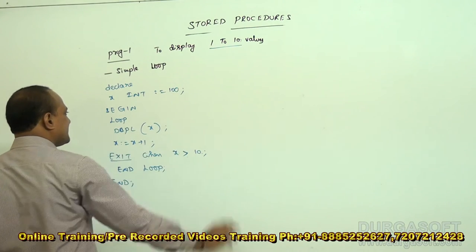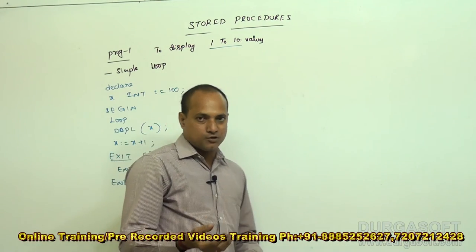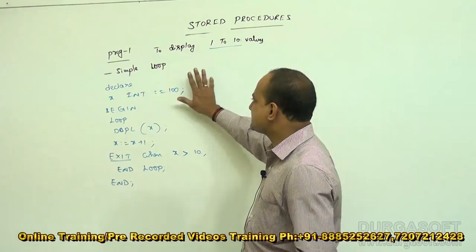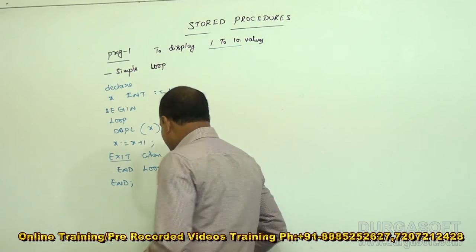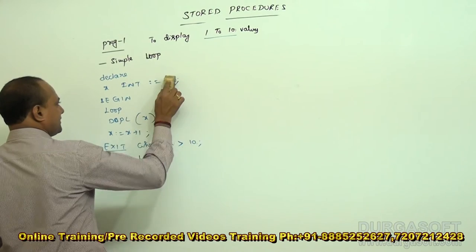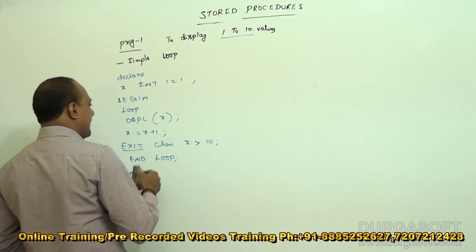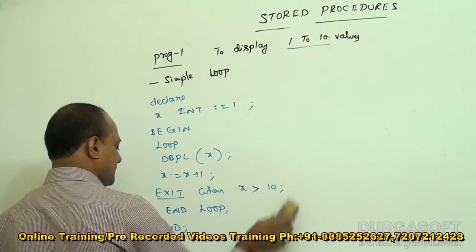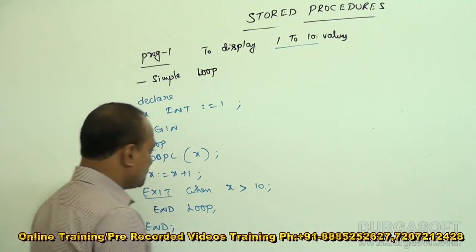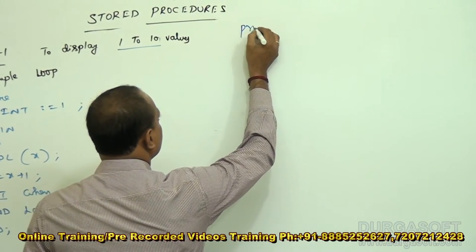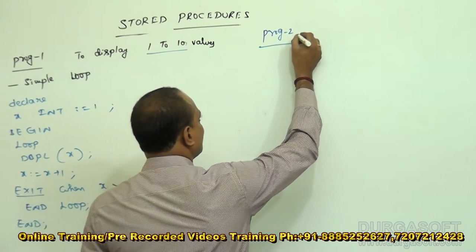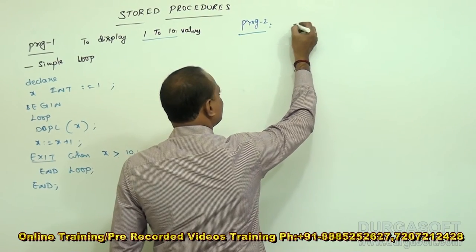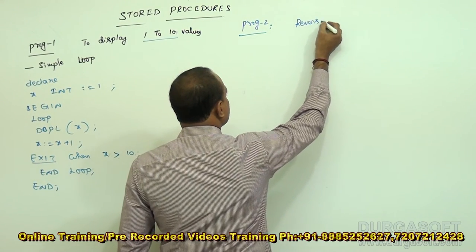Before execution of the loop statements, if you want to check a condition, then do not use a simple loop. To get correct output of 1 to 10, x should be assigned to 1, and whenever x is greater than 10 it will display 1 to 10. Now let me write a program to display the reverse of a given number using a FOR loop.